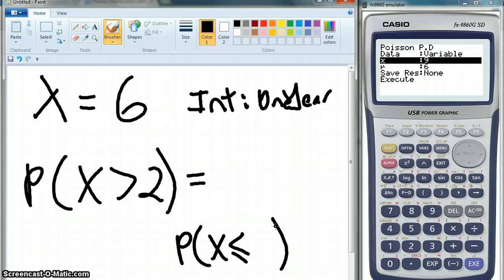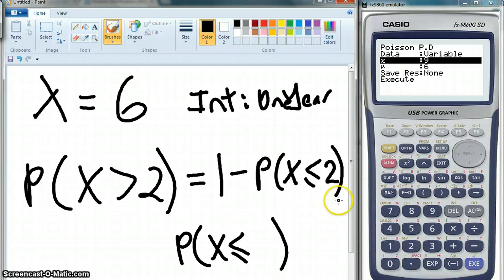Sorry, it can't be zero, it can't be one, it can't be two. So, it's one minus the probability of X being less than or equal to two. So, we're looking for the probability of it being greater than two.